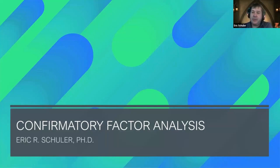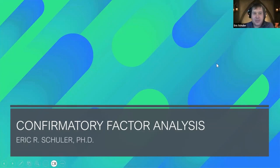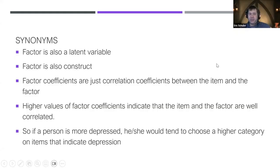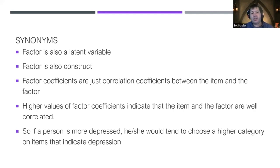Confirmatory factor analysis is just another tool for the tool belt — a way for us to provide a measure on something we can't actually directly measure. A factor, latent variable, and construct are all interchangeable terms. I'll tend to use 'latent variable' to differentiate from exploratory factor analysis.